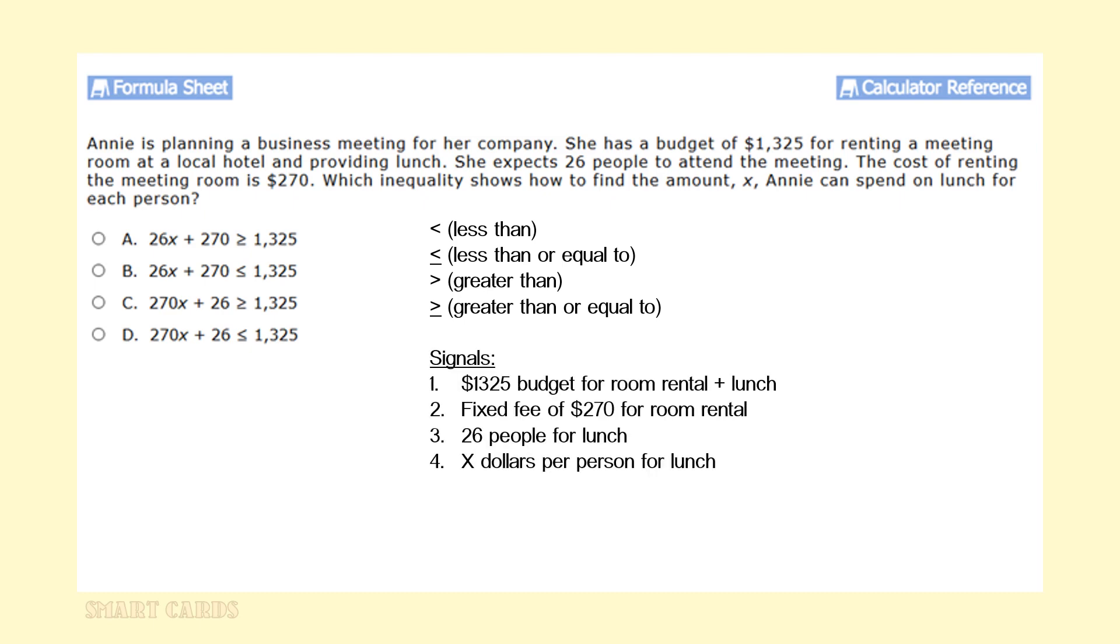Let's look at the signals in this problem. Remember, in a math problem, signals are information that's important, whereas everything else is just noise and we can disregard it. In this problem, there are four signals. The $1,325 budget that Annie has for the room rental and the lunch. The fixed fee of $270 for the room rental. The 26 people that she's inviting for lunch. And the x amount of dollars that we have to find that she can spend per person for lunch. Per person in this case means multiplication.